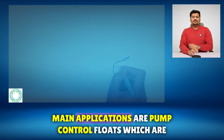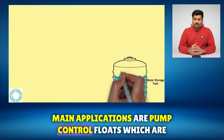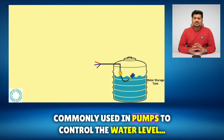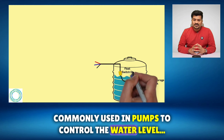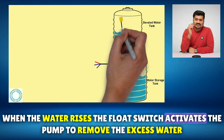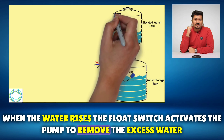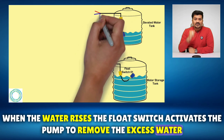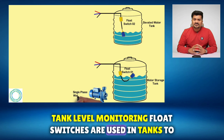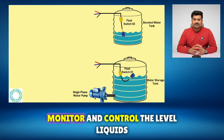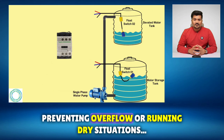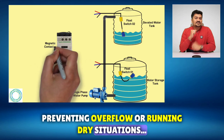Main applications include pump control. Float switches are commonly used in pumps to control the water level. When the water rises, the float switch activates the pump to remove the excess water. They are also used for tank level monitoring — float switches monitor and control the level of liquids in tanks, preventing overflow or running dry situations.